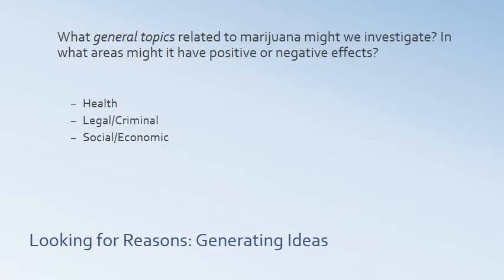Now that we know some reasons we're looking for, what are more specific areas to investigate to find either positive or negative effects, problems, or solutions? Some general topics related to marijuana include health — physical or mental — legal and criminal issues, and social and economic issues. There are many others such as historical issues, but these are some key areas given the argument we're trying to make, whether for or against making marijuana legal.